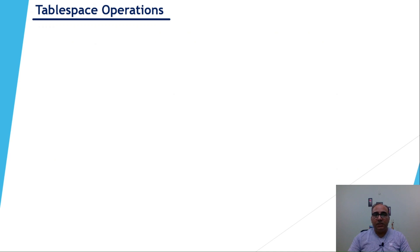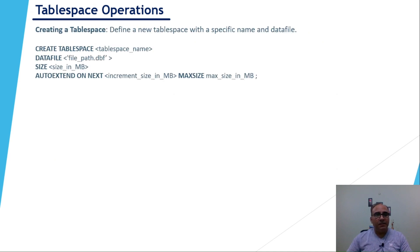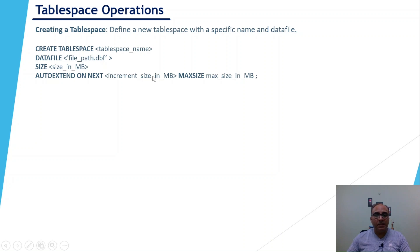For tablespace operations, to create a new tablespace the syntax is: CREATE TABLESPACE, followed by the tablespace name, then DATAFILE with the file name and size in MB. You can also specify AUTO EXTEND ON NEXT with an increment size in MB, and a MAX SIZE. This auto-extend feature means if the tablespace reaches its maximum limit, it automatically extends by the specified increment.